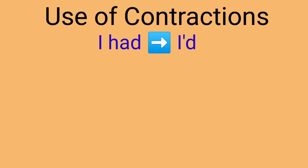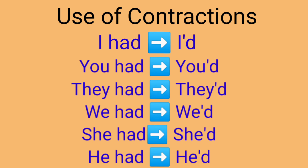Now, the use of contractions. While speaking, contractions or short forms are used — they make the flow of your conversation much smoother. I had becomes I'd. You had becomes you'd. They had becomes they'd. We had becomes we'd. She had becomes she'd. He had becomes he'd.